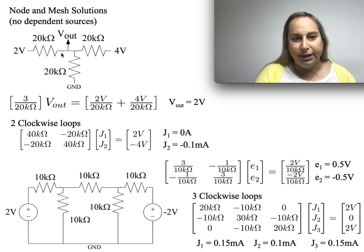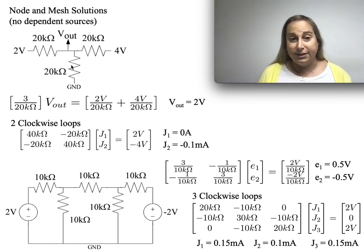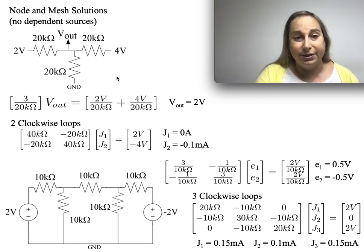And then that are in that particular loop. In this case, there's 2·20K. In the second one, there's 2·20K, so I get two 40s. And then I get minus what's shared in between. In this case, it's going to be 20K in both of these cases.